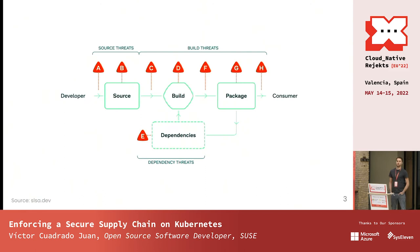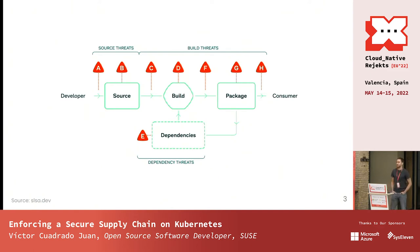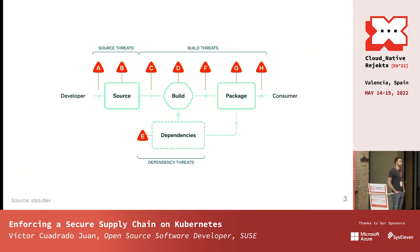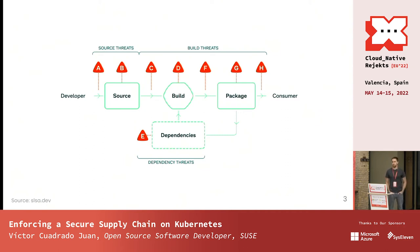What's the supply chain? I suppose everybody knows about that — everybody has maybe seen this slide already today. This is a supply chain. For us, the package in the cluster is going to be a container or a Helm chart. For obtaining the container, we need to build it, and for building it, we need the source code. So here we have the chain.